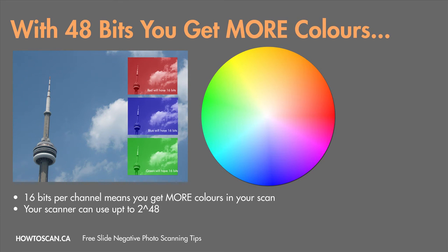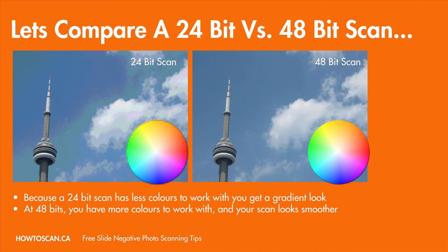When you use 48 bits, your scanner can use 2 to the power of 48 different colors to fill that one pixel — I have no idea what that number is, but it's way bigger than 16 million. Again, only one color can fill that pixel, but your scanner picks from 2 to the power of 48 options. The more bits per pixel you have, the more different gradients of colors your scanner can pick from, meaning your image will look smoother.